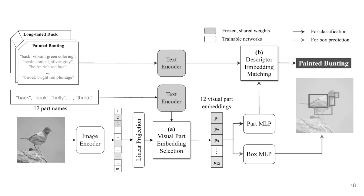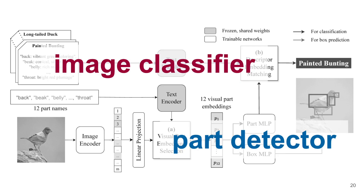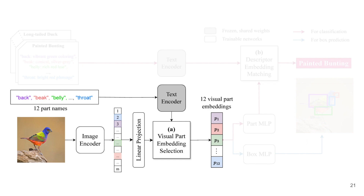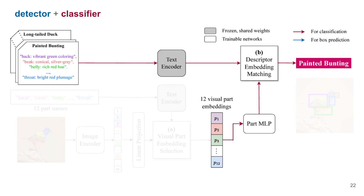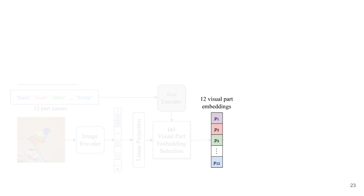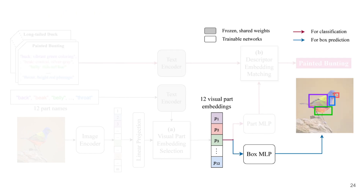PIP is composed of two main components: an object part detector and an image classifier. PIP first extracts the embeddings for object parts detected in the input image, then matches the predefined text descriptors to infer image classification labels. Interestingly, the same set of visual embeddings can also be decoded into bounding boxes for explainability.